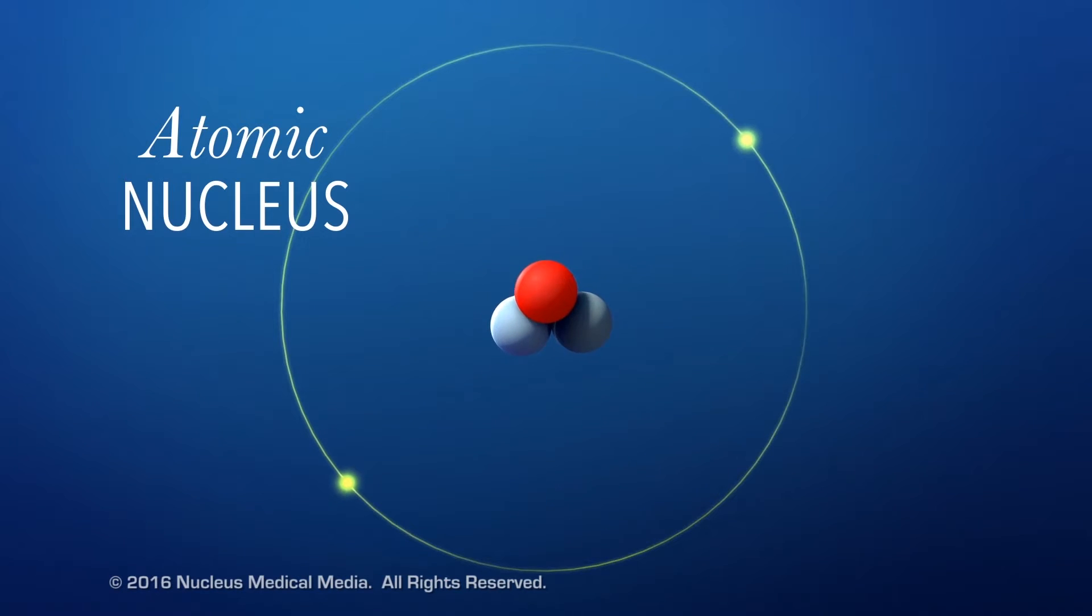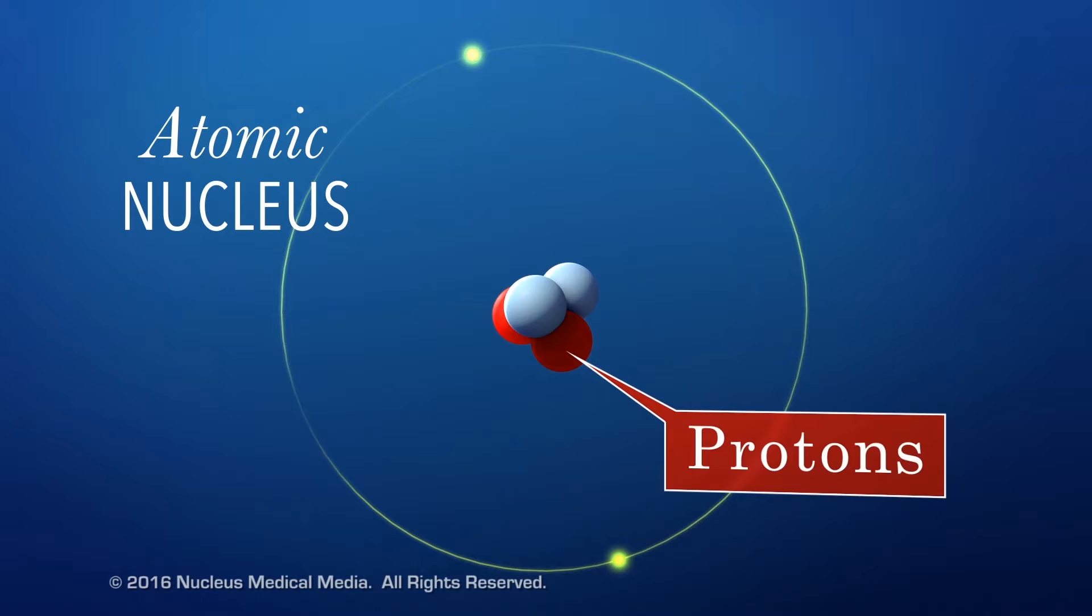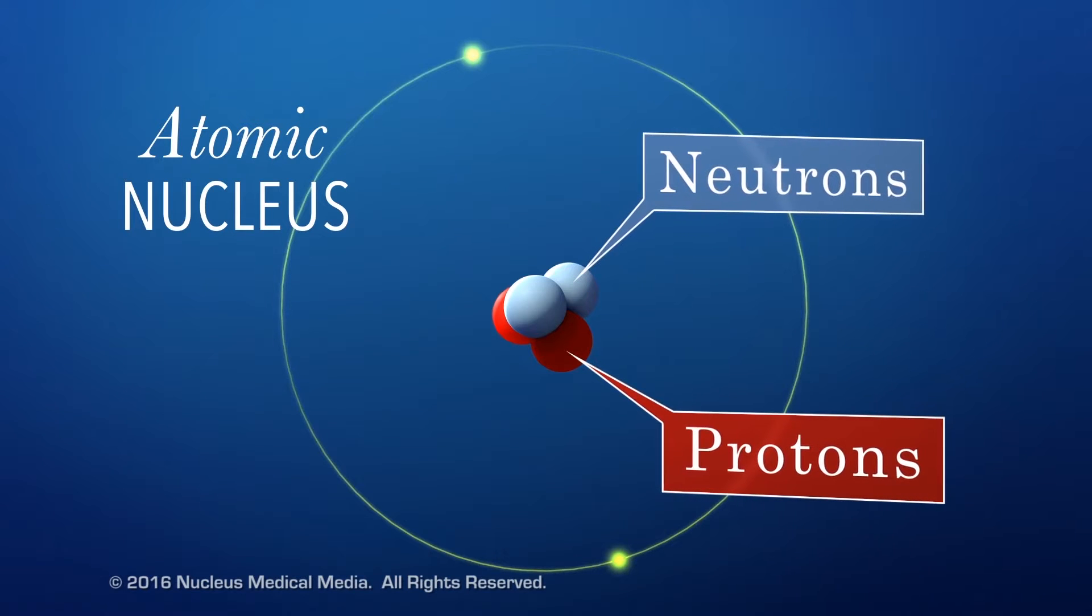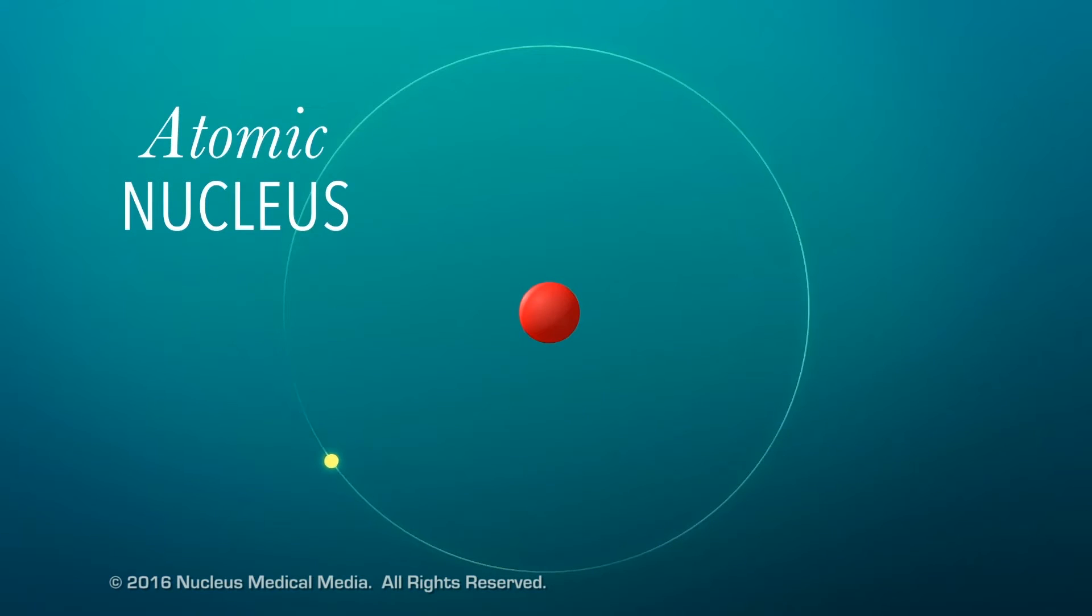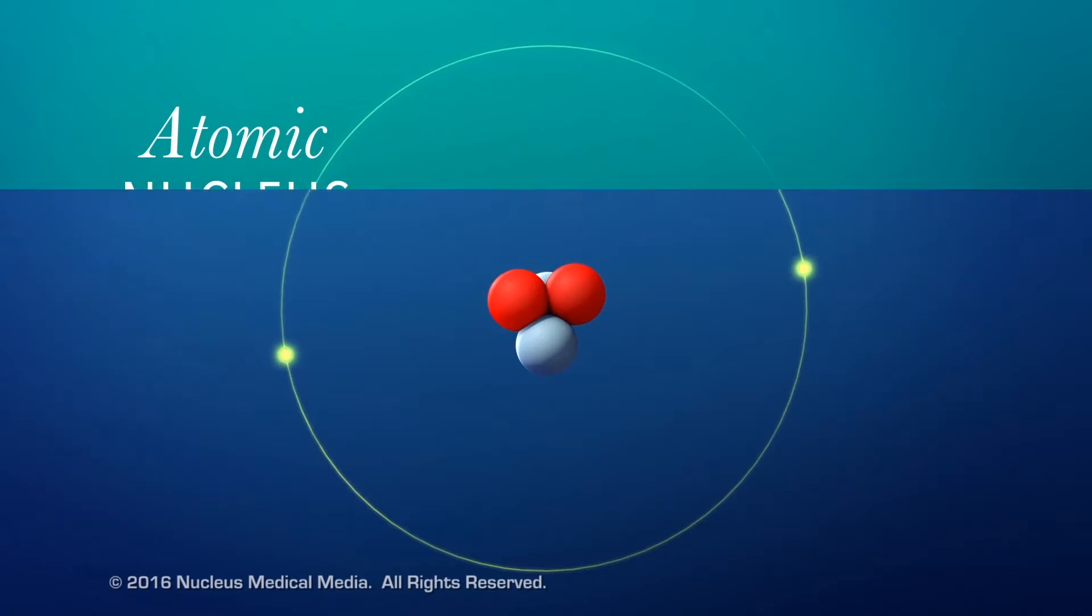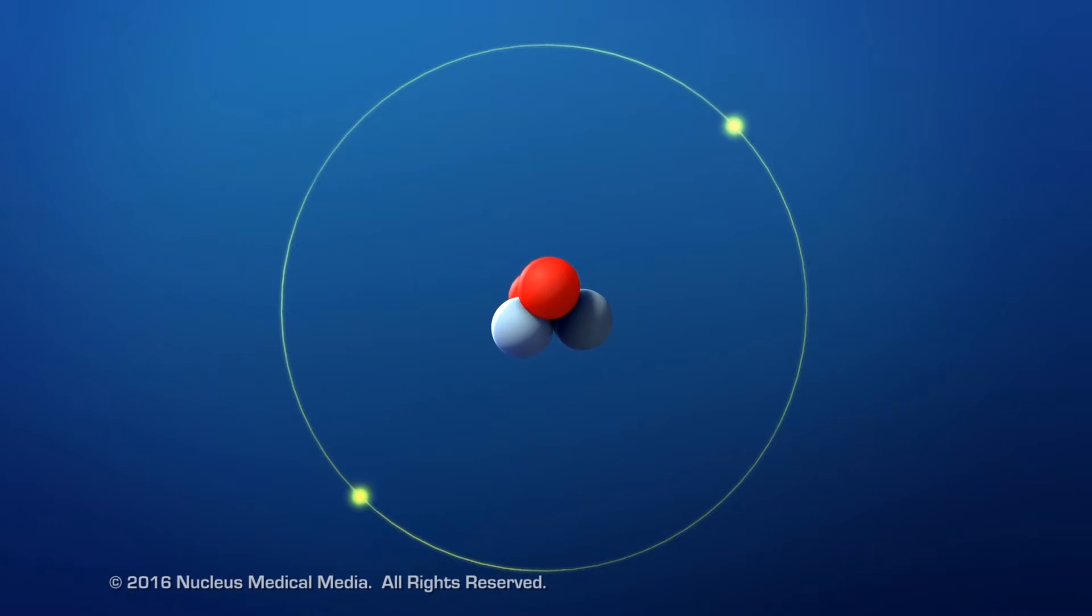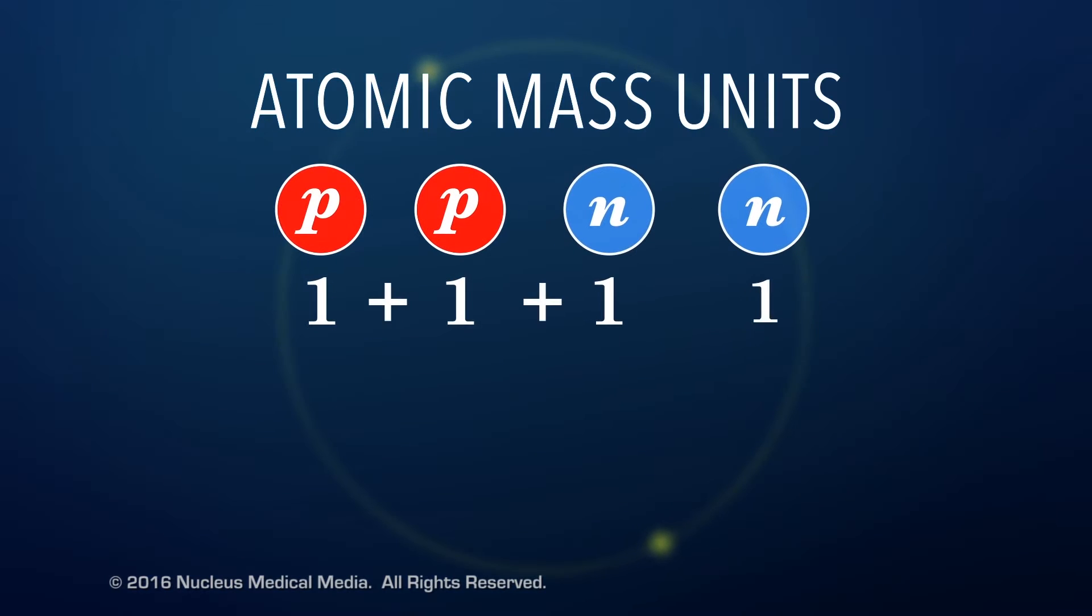An atomic nucleus is made up of one or more subatomic particles called protons and neutrons. If the nucleus has only one particle, it must be a proton. Each proton and neutron has an atomic mass unit of one.